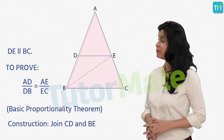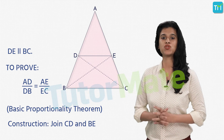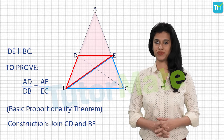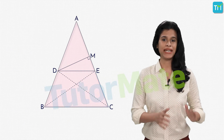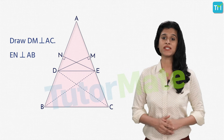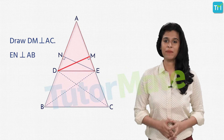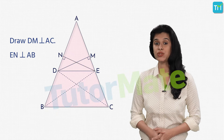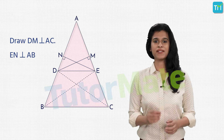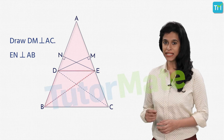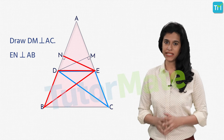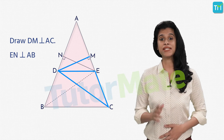First, join BE and CD. This gives us two triangles BDE and CED, which we will use in our proof. Next, we will draw DM perpendicular to AC and EN perpendicular to AB. If you consider triangle ADE, then DM and EN are the altitudes or heights of the triangle. If we consider triangles BDE and CED, then EN is the height of triangle BDE while DM is the height of triangle CED.